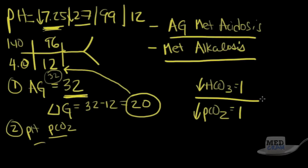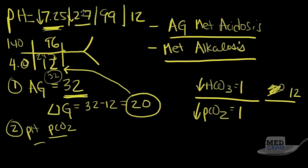Let's check if Winter's formula holds. Our bicarb dropped from 24 down to 12, a drop of 12 points. Our pCO2 dropped from 40 down to 27, a drop of 13 points. These are nearly equal, so Winter's formula is followed perfectly for a metabolic acidosis.